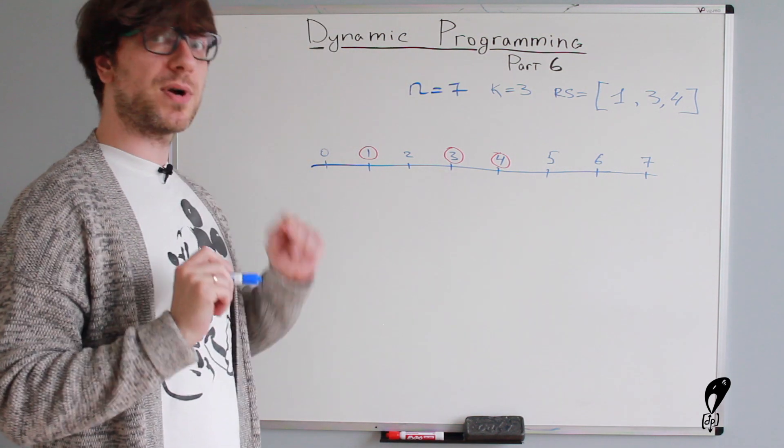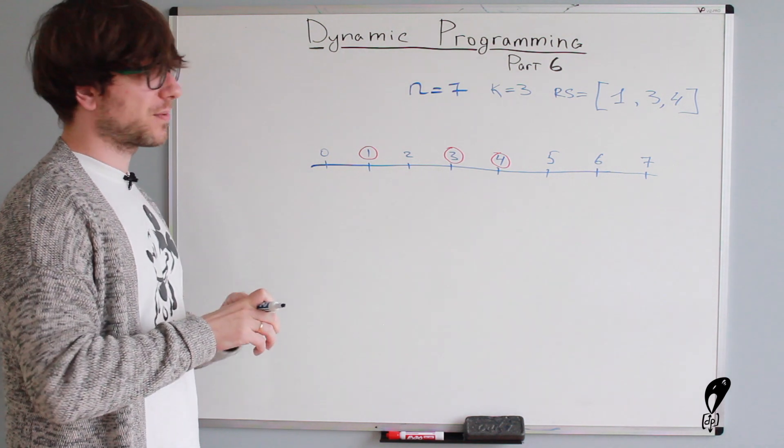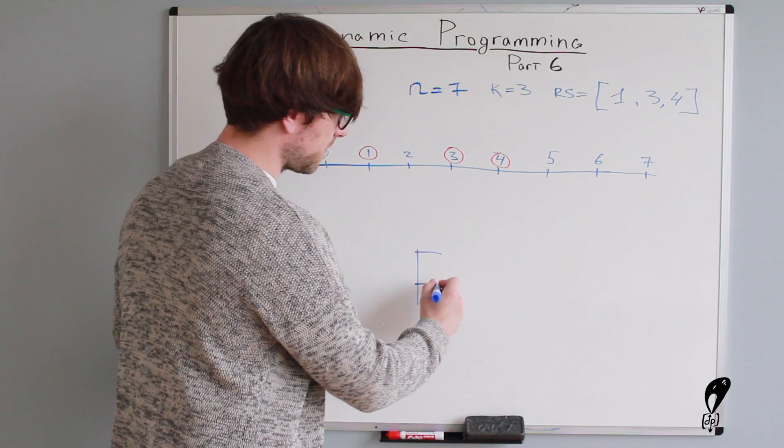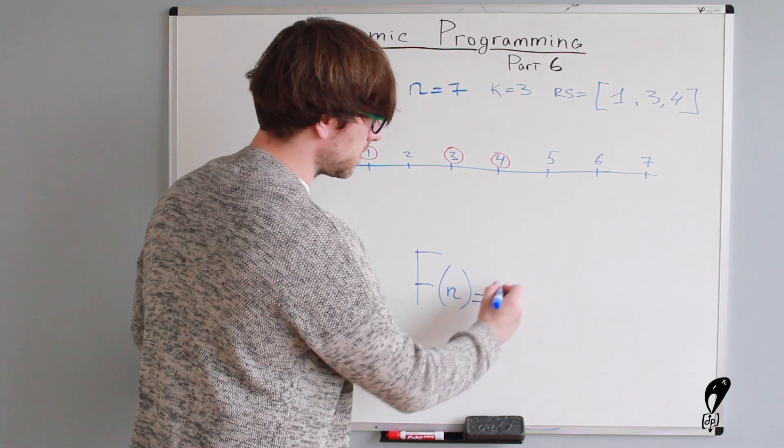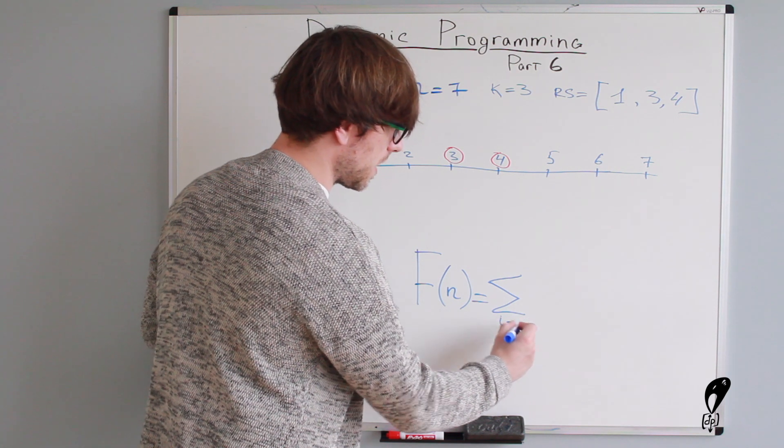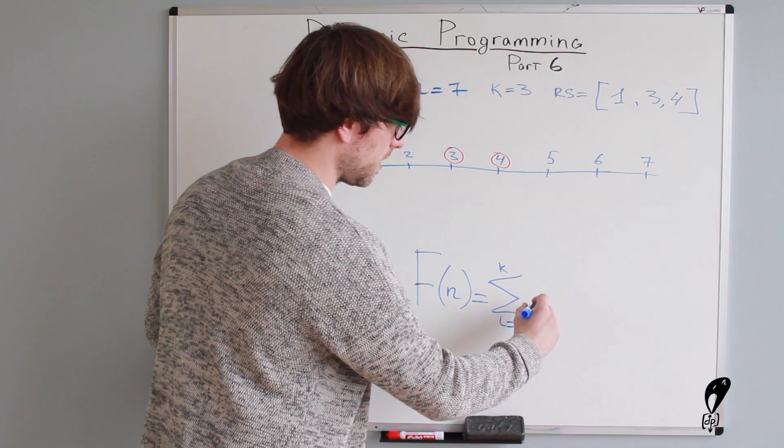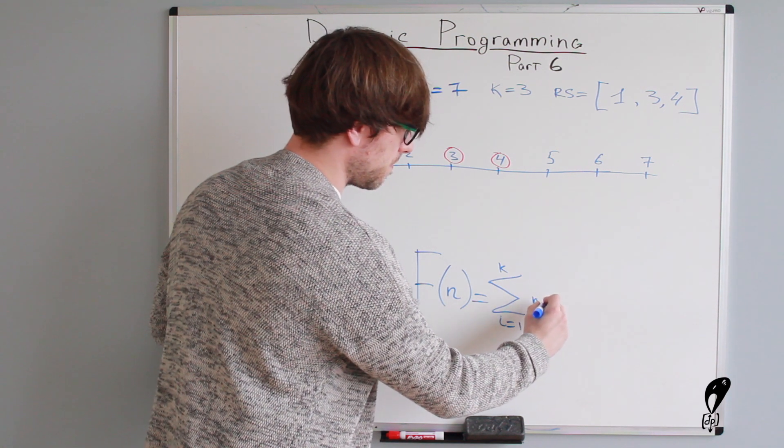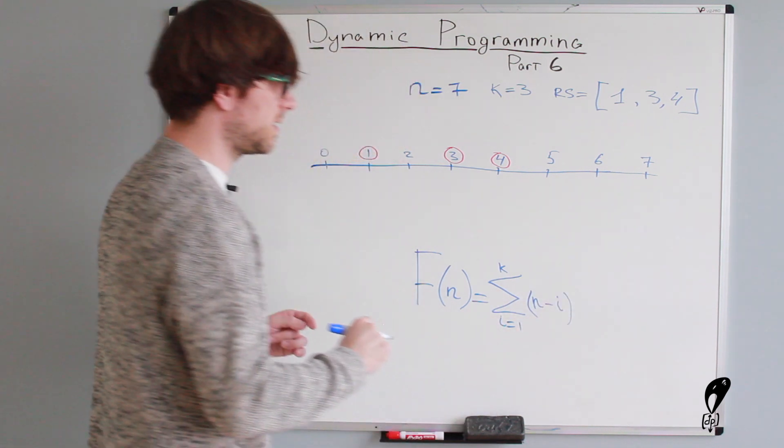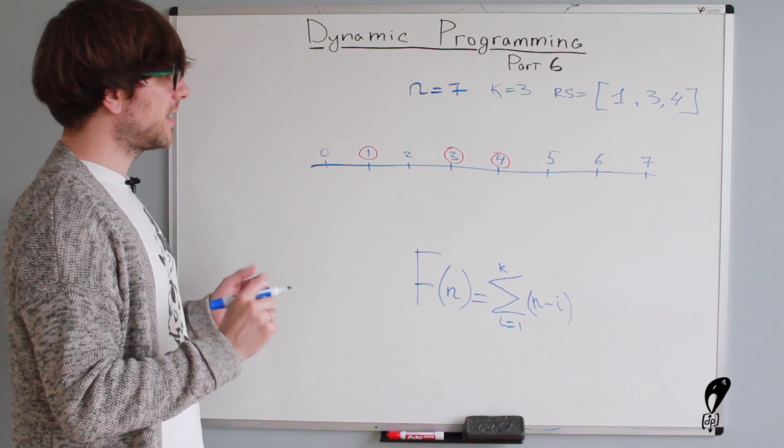Okay. So now let's remember what was the transition function for the regular K steps version of the problem. So if you remember, it was F of N equals the sum for all the I's starting from one to K and then N minus I. So this is the formula. Great. So now let's try to solve the problem for when N equals zero.